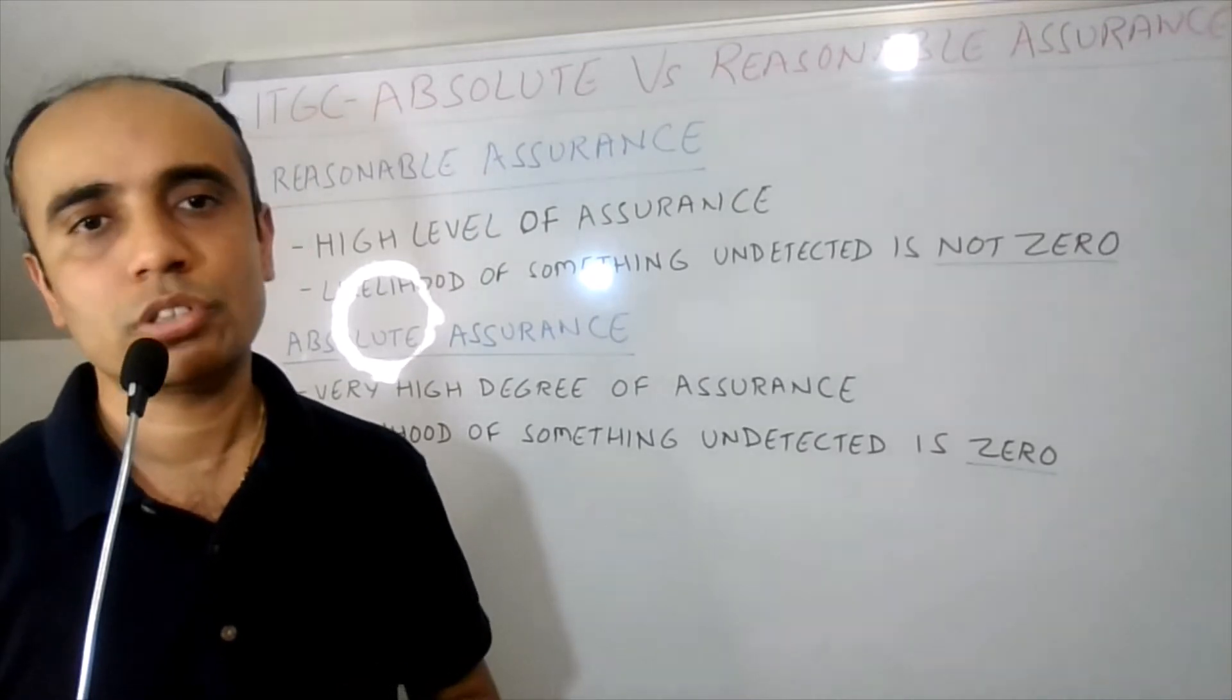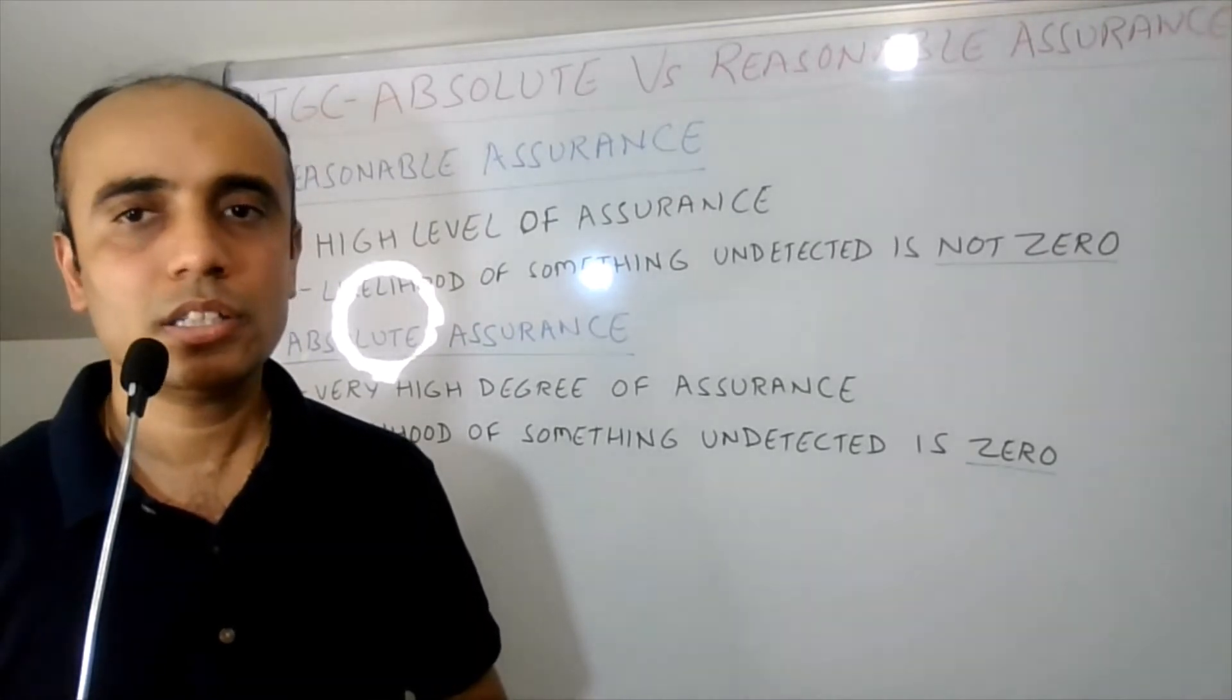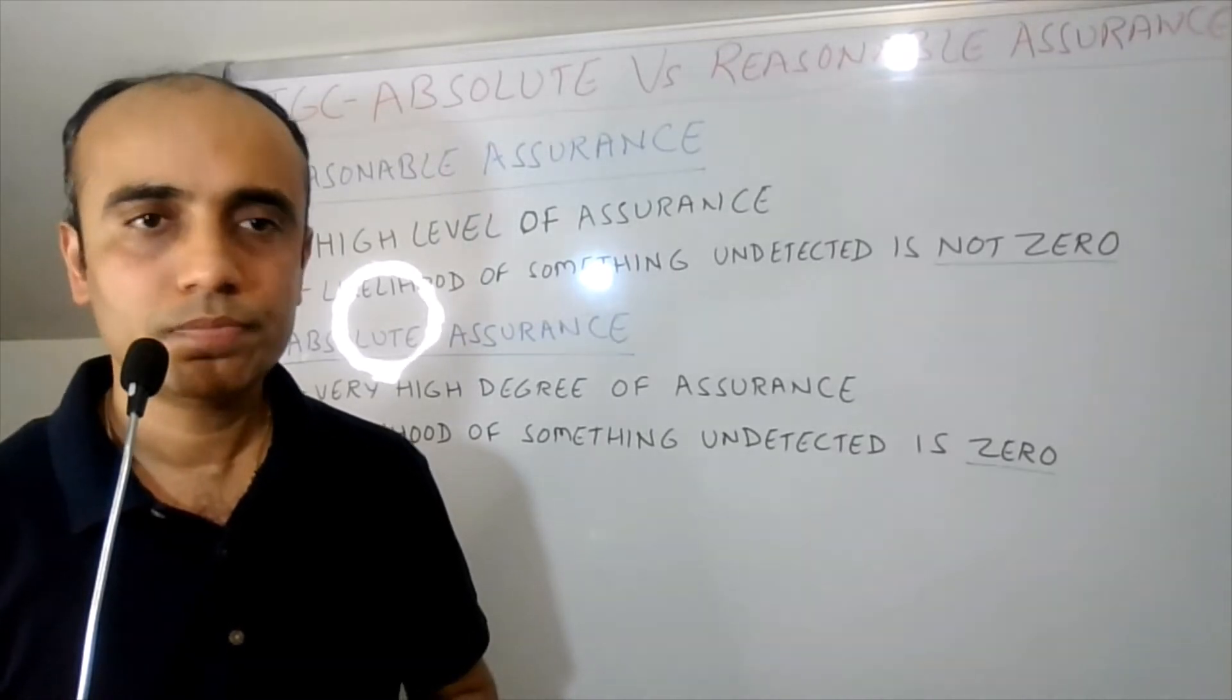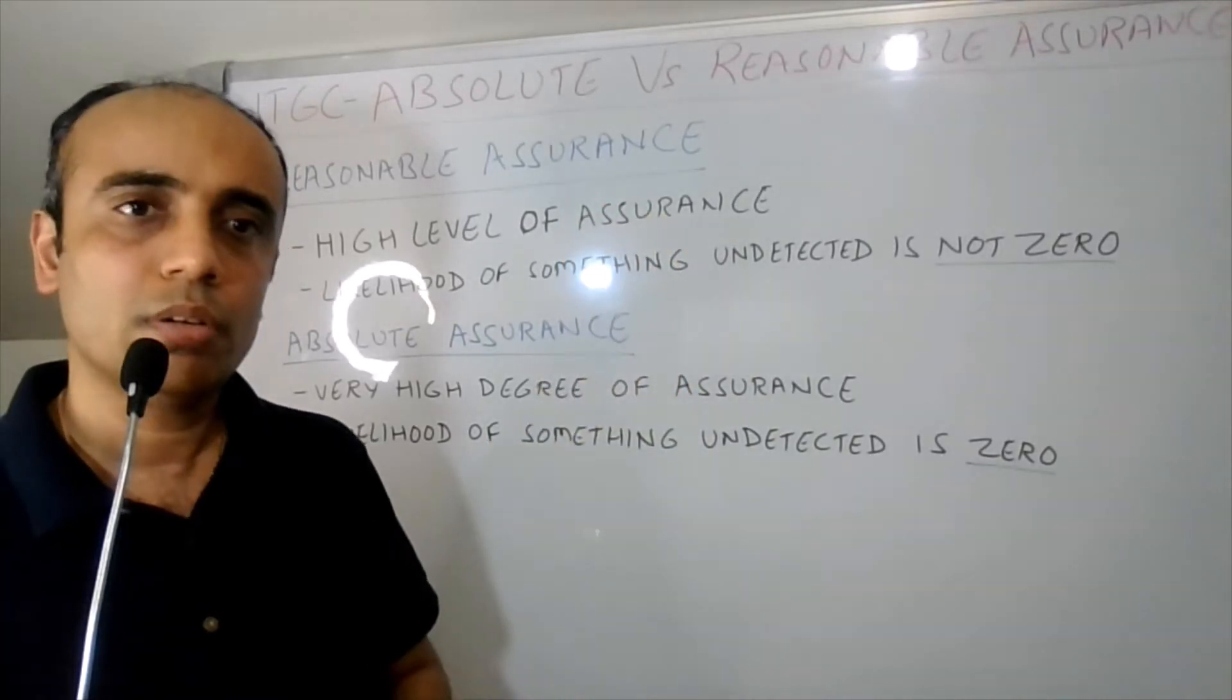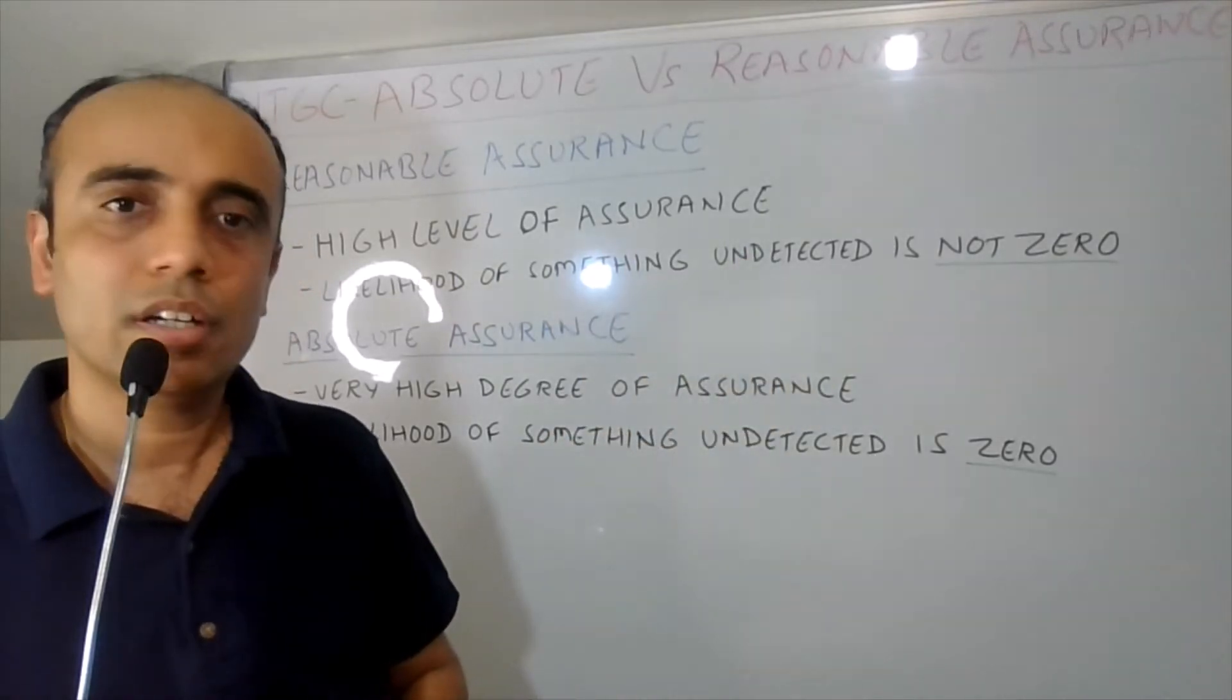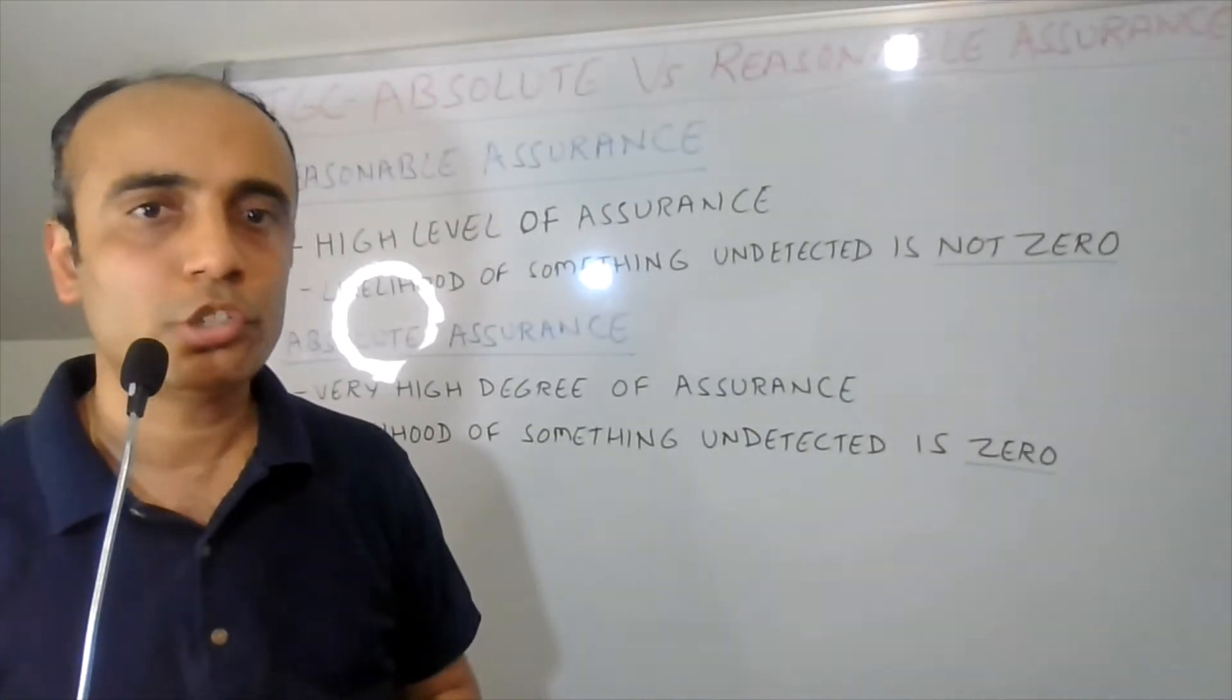...is a high level of assurance, but there is still a remote possibility that something might be incorrect somewhere to some degree without being detected. That's what I've listed here as well. It's a high level of assurance, but there is some likelihood of something remaining undetected. So that likelihood is not zero.